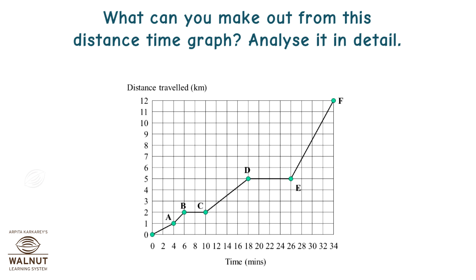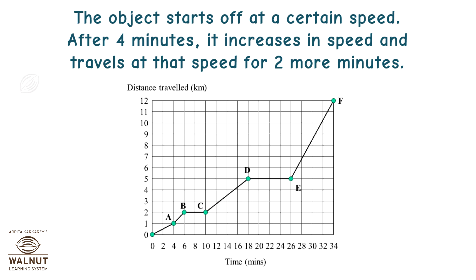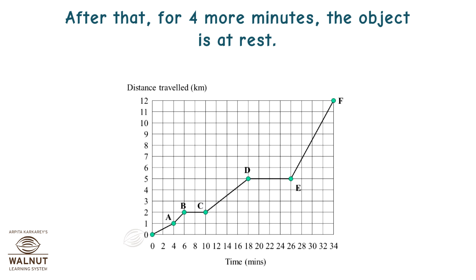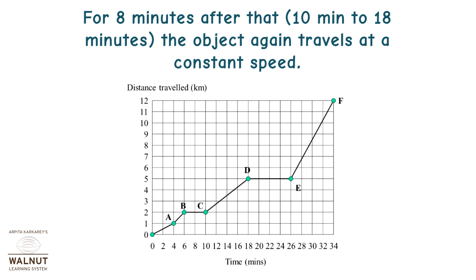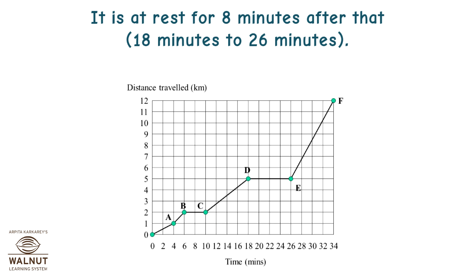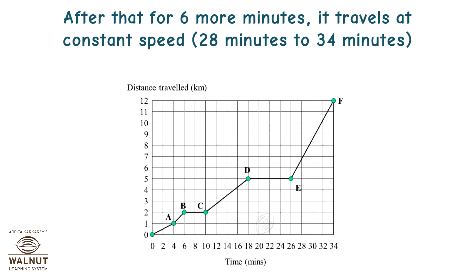What can you make out from this distance-time graph? Analyse it in detail. The object starts off at a certain speed. After 4 minutes, it increases in speed and travels at that speed for 2 more minutes. After that, for 4 more minutes, the object is at rest. For 8 minutes after that — 10 to 18 minutes — the object again travels at a constant speed. It is at rest for 8 minutes after that, from 18 to 26 minutes. After that, for 6 more minutes, it travels at constant speed, from 28 to 34 minutes.